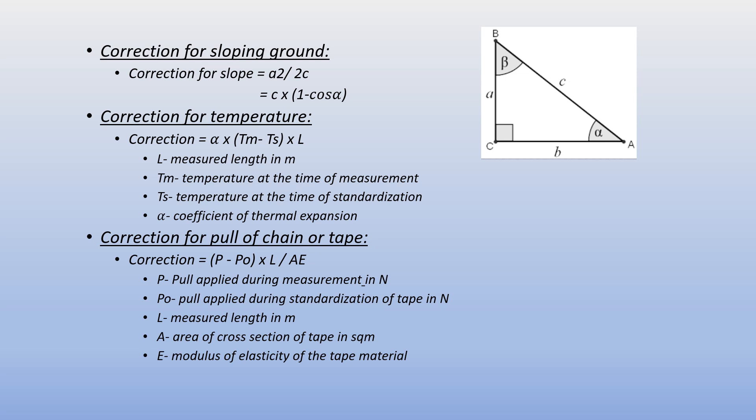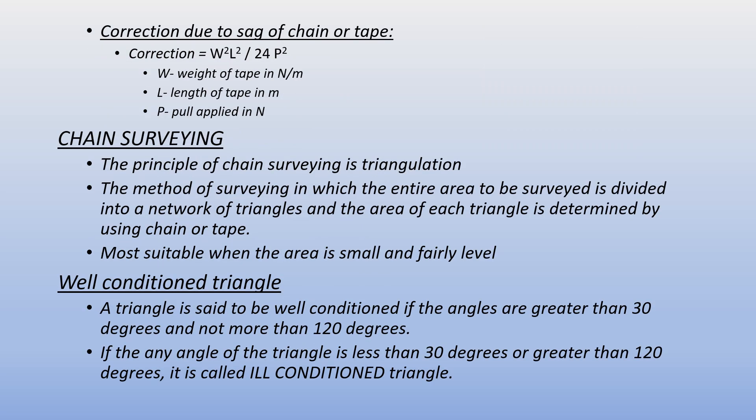The correction for pull of chain or tape equals (P − P₀) × L / (A × E), where P is pull applied during measurement, P₀ is standardization pull of tape, L is measured length in meters, A is area of cross-section of tape in square meters, and E is modulus of elasticity of the tape material. The correction due to sag of chain or tape equals W²L²/(24P²), where W is weight of tape in newtons per meter, L is length of tape in meters, and P is pull applied in newtons.